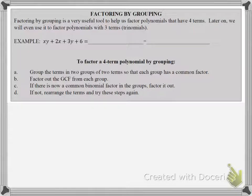In these examples, we are going to look at a method called factoring by grouping. We use factoring by grouping when we have a polynomial with four terms. Later on, we will also use it when we have trinomials with three terms. But for now, we're going to focus on polynomials with four terms and how we use the factor by grouping.